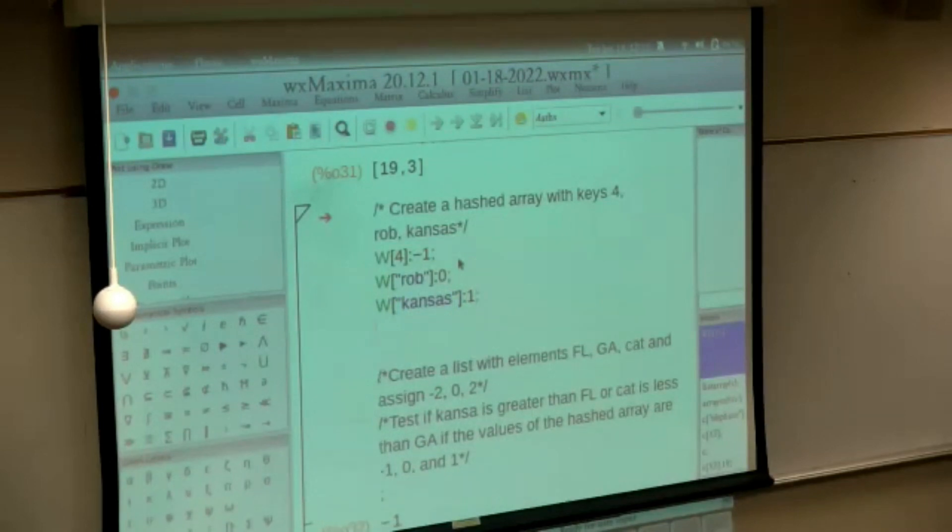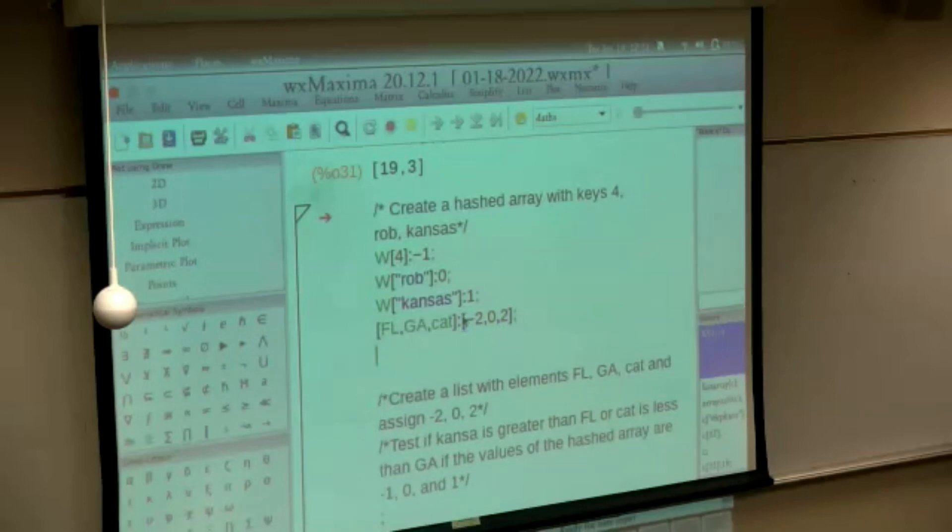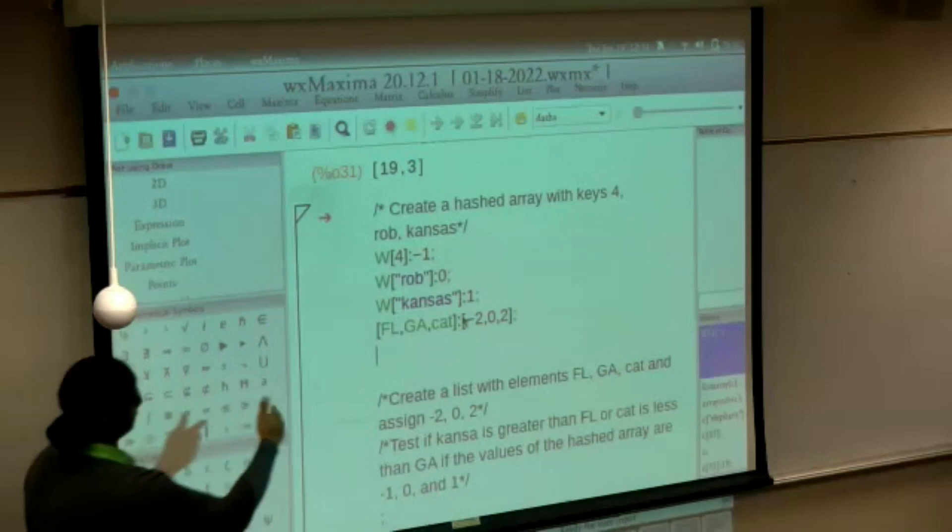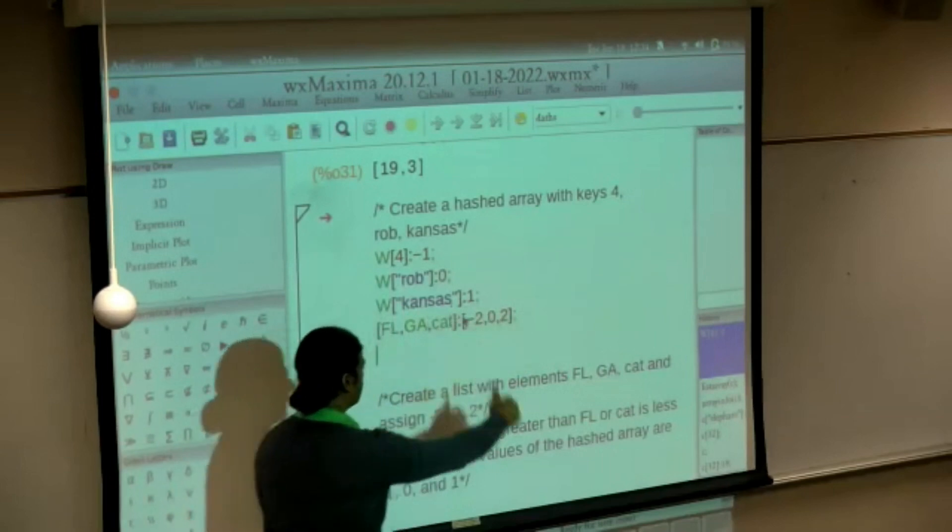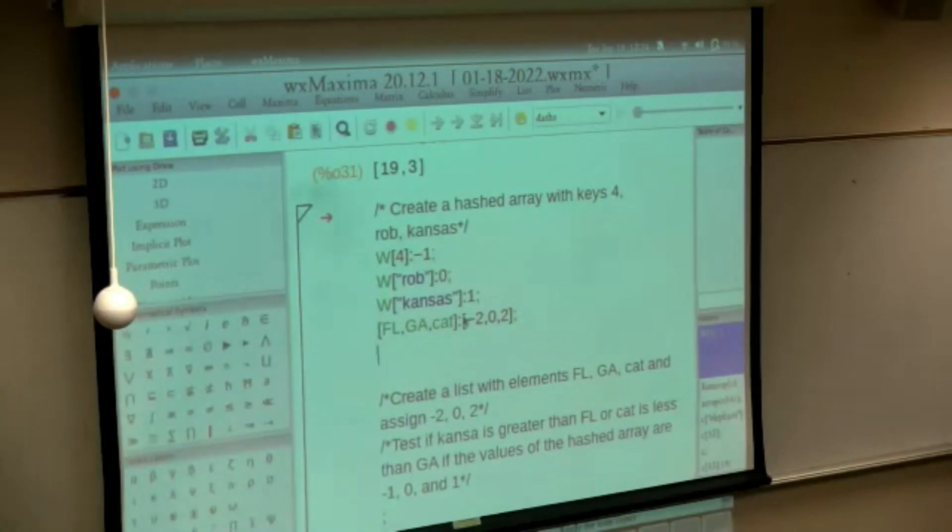I have not executed anything, I'm just hitting enter, doing a multiple assignment so that it is there. So the list is Florida, Georgia, Kansas. We're going to assign minus two to Florida, zero to Georgia, and Kansas I'm going to assign the value two.